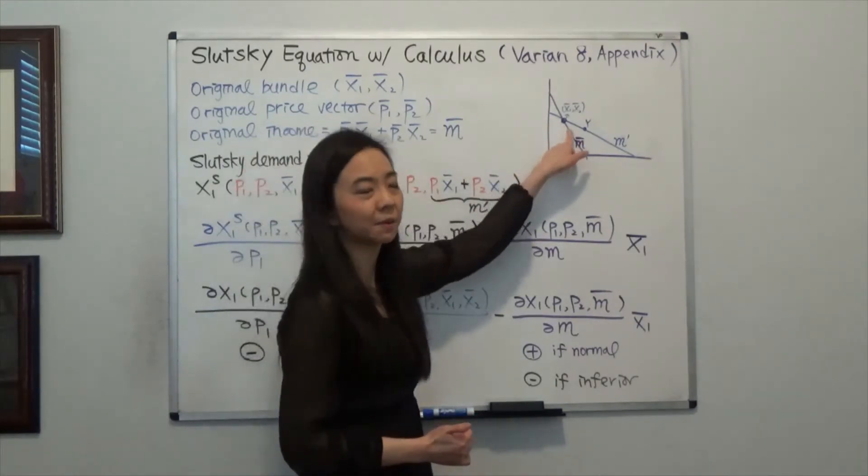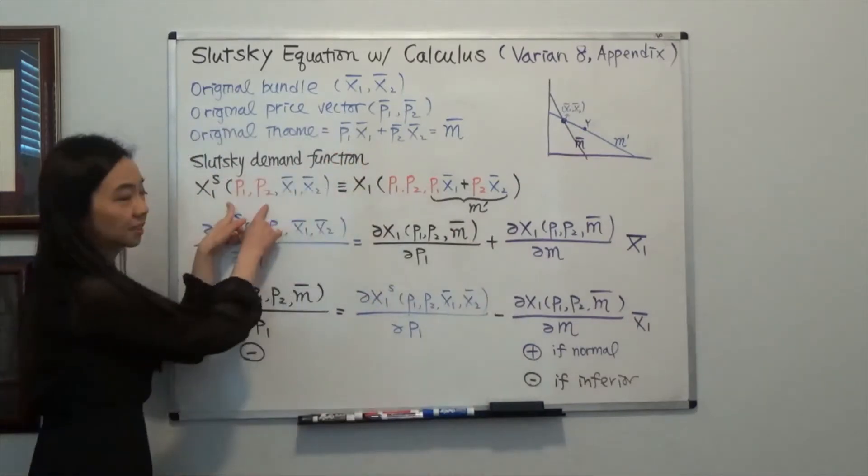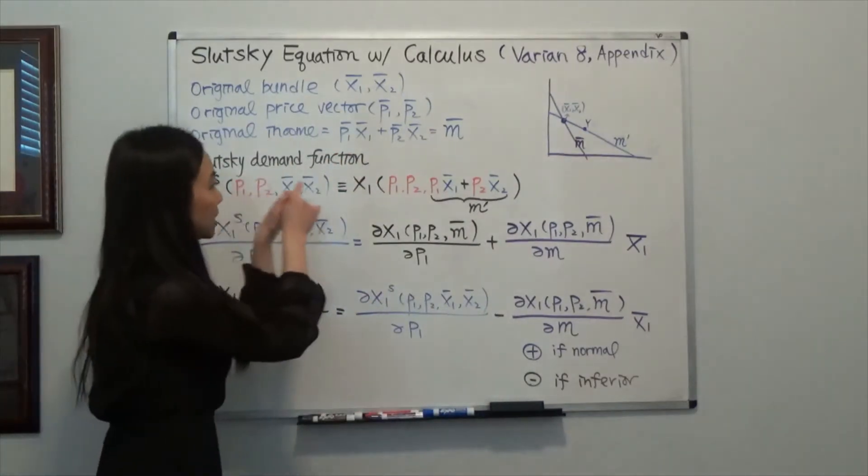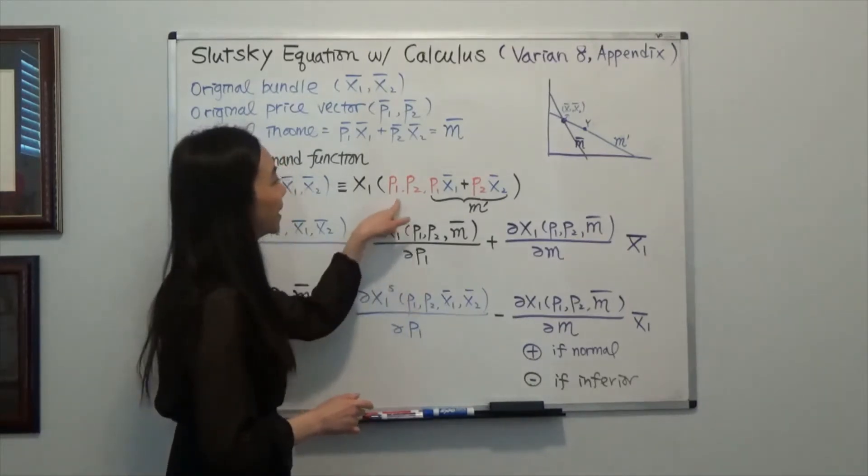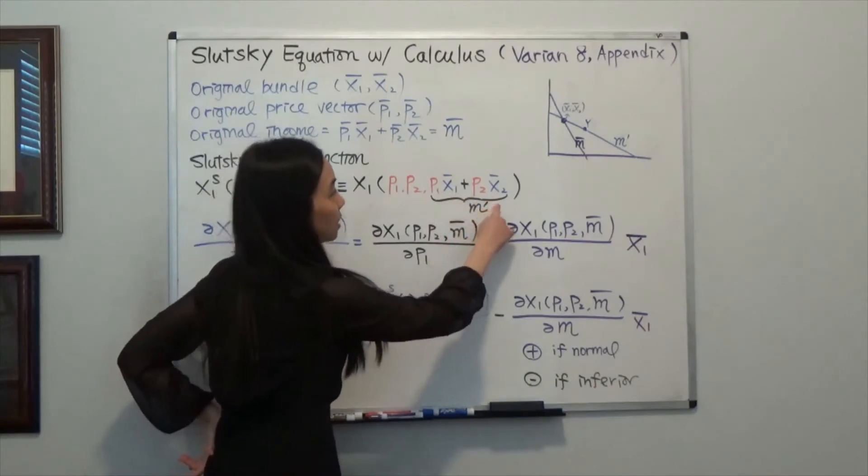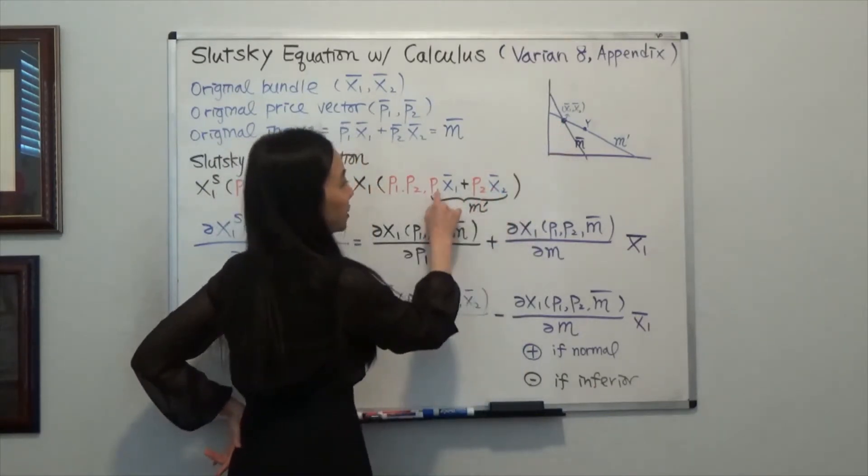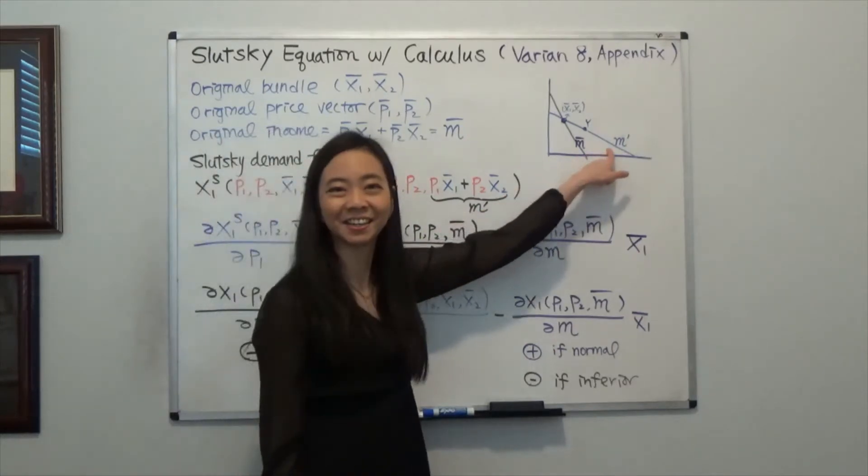But we know that we're not going to buy the bundle, we're going to buy bundle y. So we call this Slutsky demand function which is just the original demand function given the new price and a budget that allows me to buy the original bundle given the new price. So we can call that m prime which is this line here.